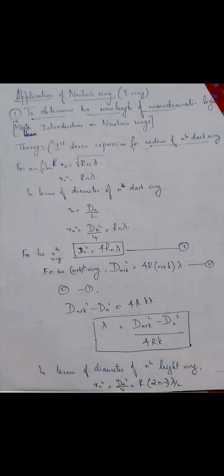We had discussed the expression for the radius of the nth dark ring and any bright ring. Now, if the film is made of any liquid having refractive index mu — such as oil, glycerin, or kerosene — we have a liquid film. You take a glass plate, put a few drops of the required liquid, place the convex lens on top, and you get the liquid film. In that case, the radius of the nth dark ring is rn equal to root of R·n·lambda divided by mu.